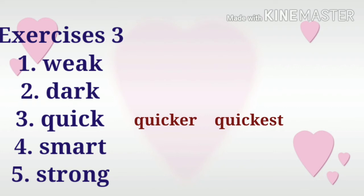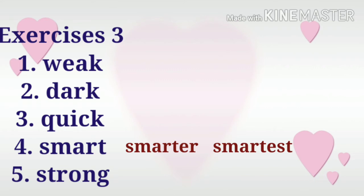Let's now move to number four. The word is smart. The comparative degree of smart is smarter — we add ER at the end of the word. In the superlative degree, the word is smartest. So: smart, smarter, smartest.